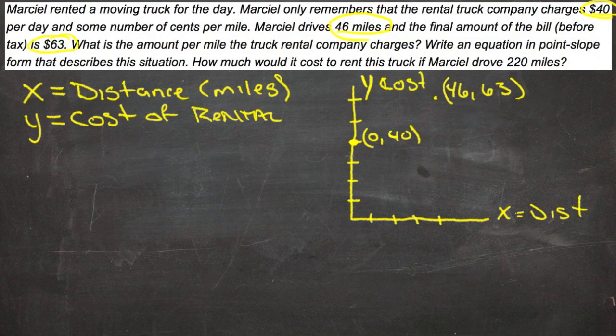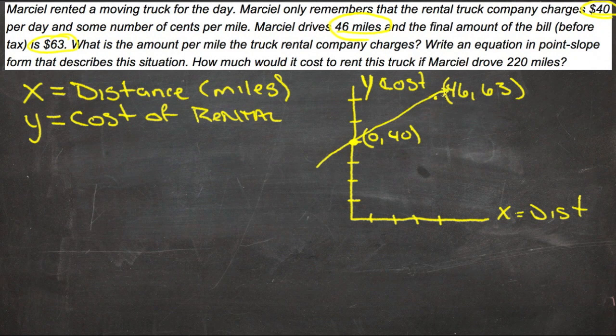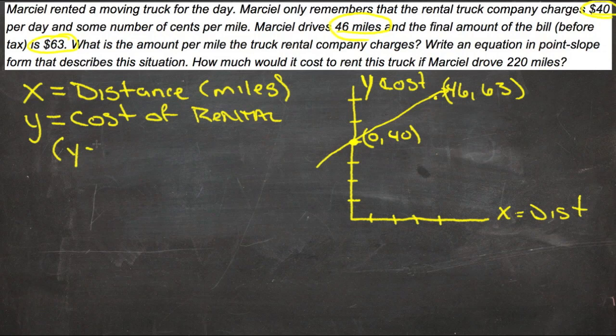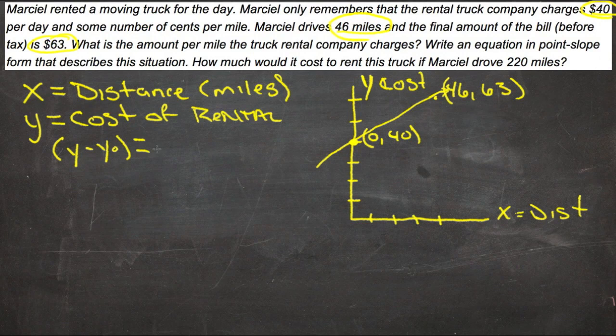We can see already there's a line going across here this way that would represent the total cost of the truck, and we should be able to write our equation in point-slope form using our two points. Remember that point-slope form is y minus y₀ equals m times x minus x₀.